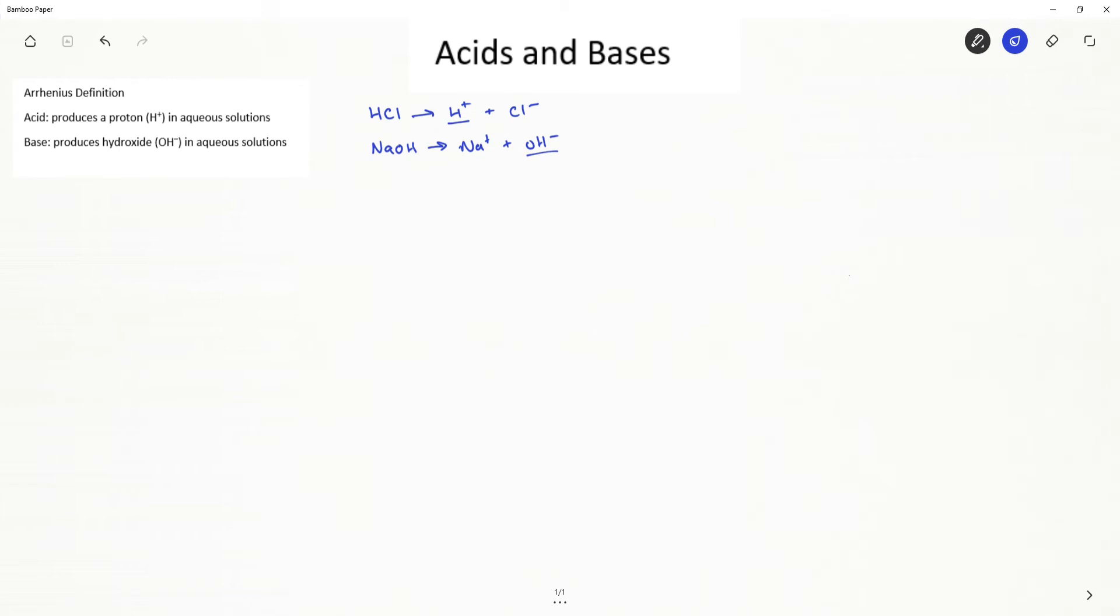Our Arrhenius definition works very well for many acids and bases. However, there are some species where the Arrhenius definition just does not fit. And one of these species is ammonia. Ammonia is a known base.